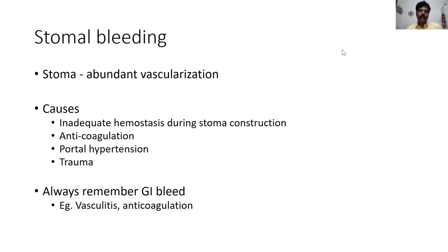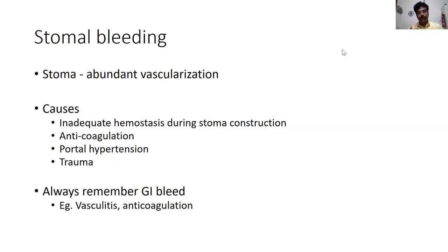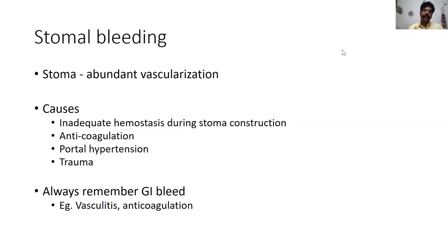Other common causes include anticoagulation — for example, if a stoma is done for bowel ischemia and the patient is anticoagulated, we may encounter ooze. It can also result from peristomal varices due to portal hypertension, or be as trivial as trauma when applying a stoma bag. Always remember that stoma bleeding can also mimic a GI bleed. If the primary etiology is vasculitis involving the GI system, and we perform a resection and mature a stoma that starts bleeding, it may be from the GI tract as well.